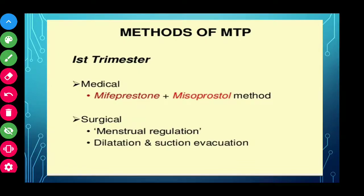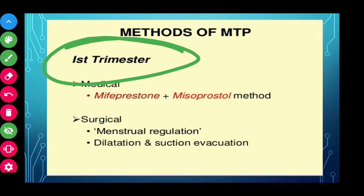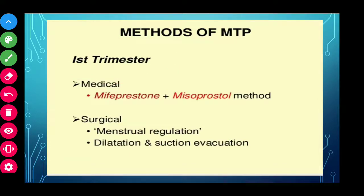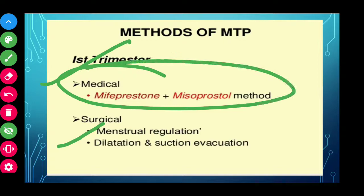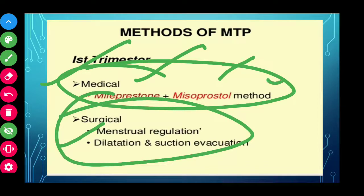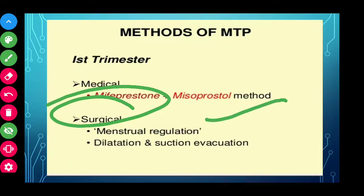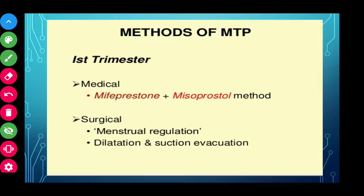Methods of MTP: In the first trimester — before three months — medical methods should be performed first. Mifepristone and Misoprostol should be given. If the abortion process starts and completes, there is no need to go for a surgical method. After giving the medical method, if termination did not occur, then you can go for surgical method — that is menstrual regulation, dilatation and suction evacuation. These will be discussed in later sessions. That is what is done in the first trimester.